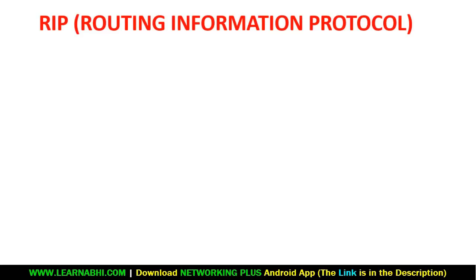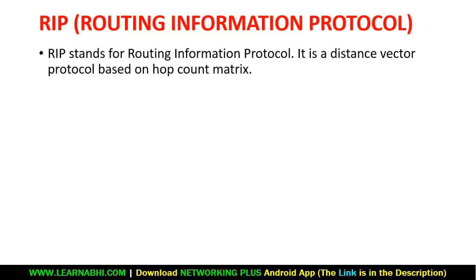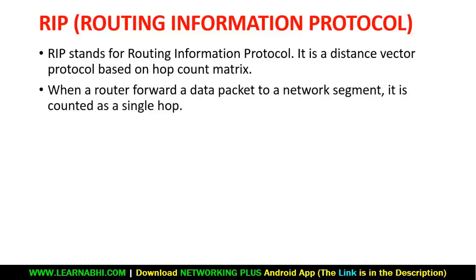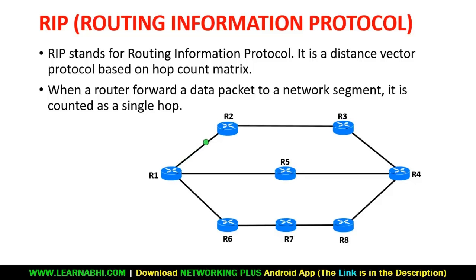RIP stands for Routing Information Protocol. It is a distance vector protocol based on hop count metric. When a router forwards data packets to a network segment, it is counted as a single hop count. For example, Router 1 to Router 2 is one hop count, Router 2 to Router 3 is two hop counts, and Router 3 to Router 4 is three hop counts. RIP supports a maximum of 15 hop counts, meaning a maximum of 16 routers can be configured in RIP — this is one of the biggest disadvantages of RIP.